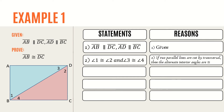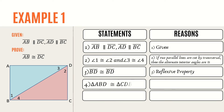We can see that we have a quadrilateral ABCD composed of two triangles: triangle ABD and triangle CDB. For our third statement, side BD is congruent to side BD. The reason is the reflexive property. From statements 2 and 3, we can say that triangle ABD is congruent to triangle CDB by applying the ASA congruence postulate: for A, we have angle 1 is congruent to angle 2; for S, we have side BD; and for the second A, angle 3 is congruent to angle 4.